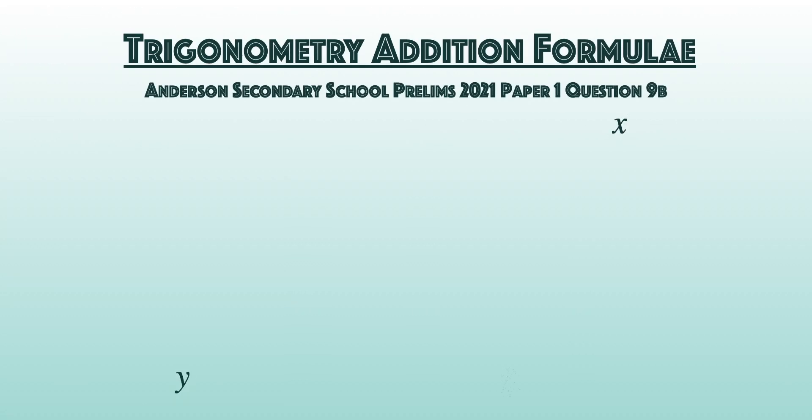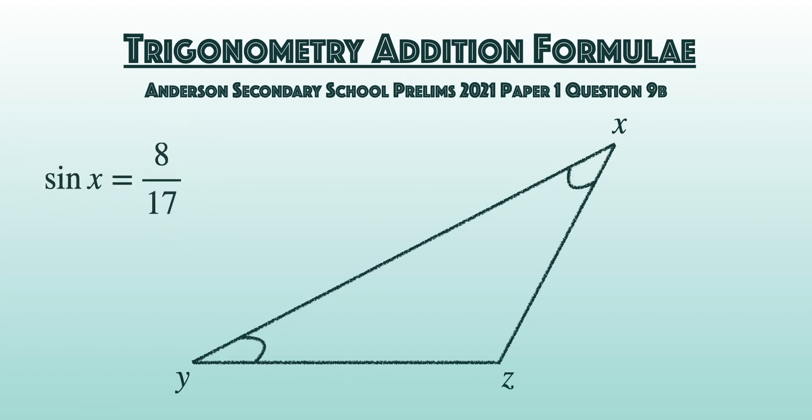X, Y, and Z are three angles of a triangle. Given that X and Y are acute angles such that sin X equals 8/17 and sin Y equals 3/5, without the use of a calculator, find the exact value of tan Z.